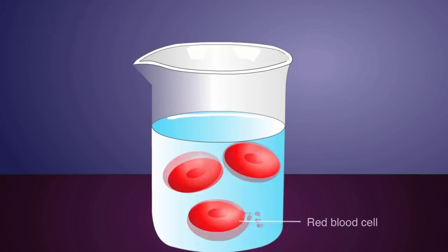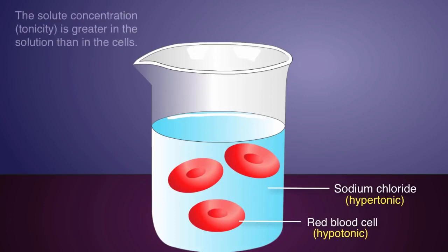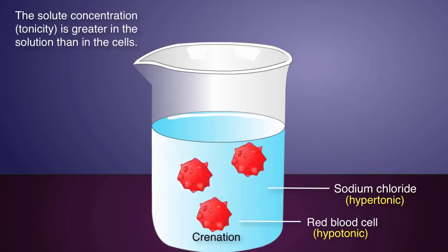Now let's place the red blood cells in a beaker containing a solution of salt, such as sodium chloride. Since the contents of the beaker are hypertonic in relation to the interior of the cells, the water within the cells will diffuse across the membrane and into the contents of the beaker. This causes crenation, or shrinking, of the cells.